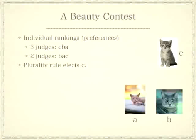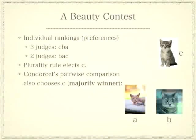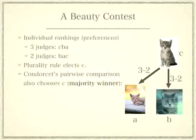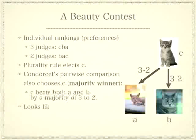Another method is by Condorcet, an 18th century French mathematician. He didn't like the idea of ignoring the second and third alternatives in each preference. Instead, his method compares each pair of alternatives: A versus B, A versus C, and B versus C. In this case, since C beats A by a score of 3 to 2 and C beats B by 3 to 2, C is the clear winner — called the majority winner or the Condorcet winner. It looks like C is the right choice, but is it?